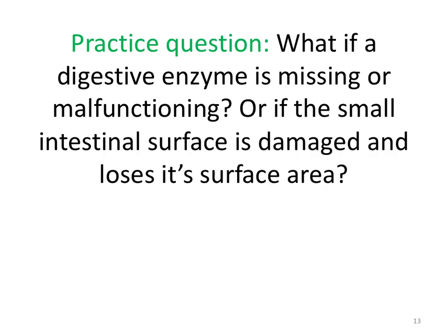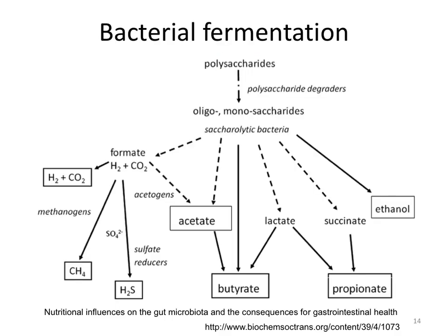But what happens if one of these carbohydrate digestive enzymes is missing or malfunctioning, or if there is a problem with the small intestine such that it loses its surface area? If this happens, then polysaccharides, disaccharides, and monosaccharides end up proceeding through the small intestine to the large intestine. The colon is full of bacteria, and bacterial fermentation occurs. While some fermentation always occurs with soluble fibers, a problem with digestion or absorption of carbohydrates will cause this to occur in excess.